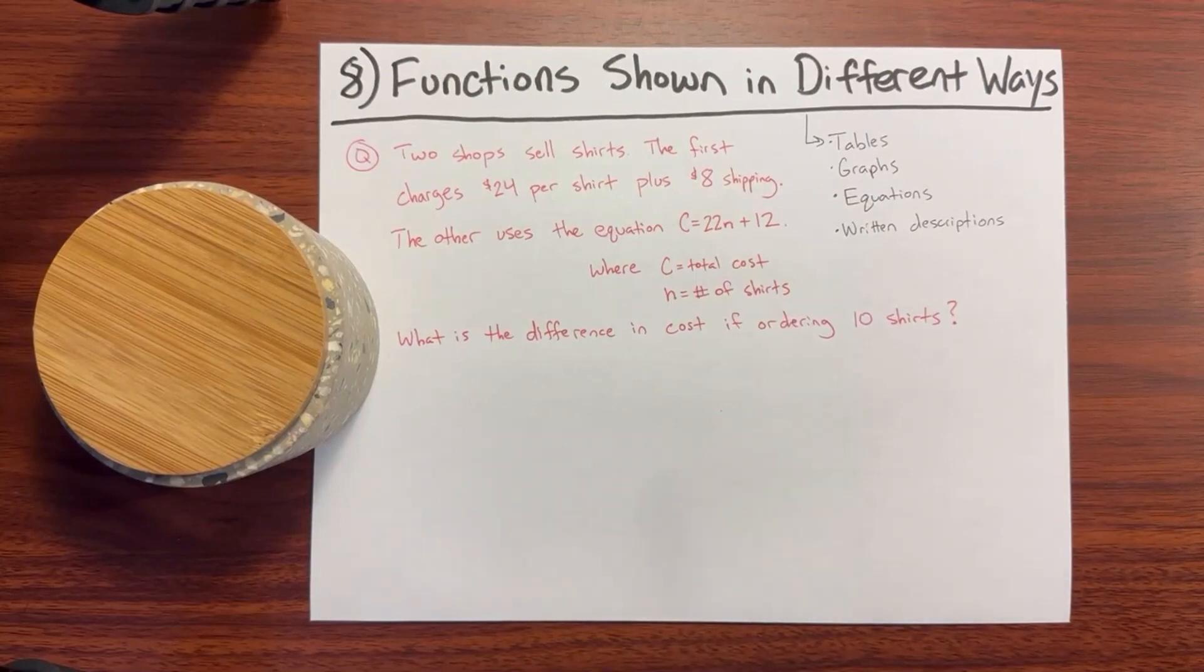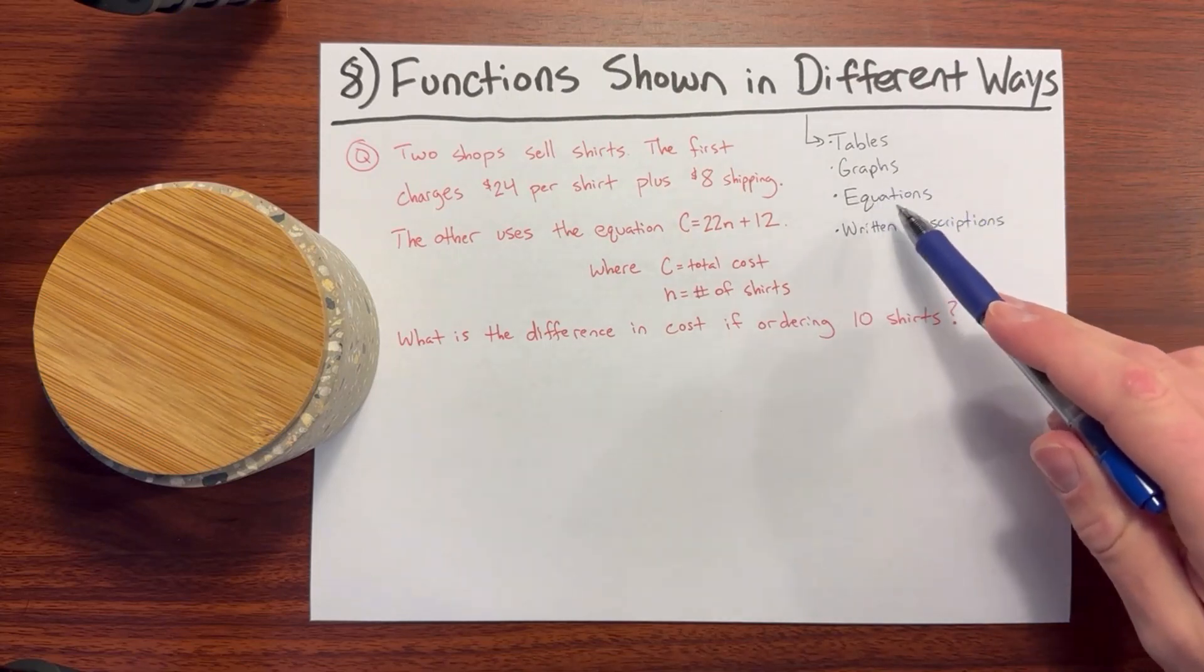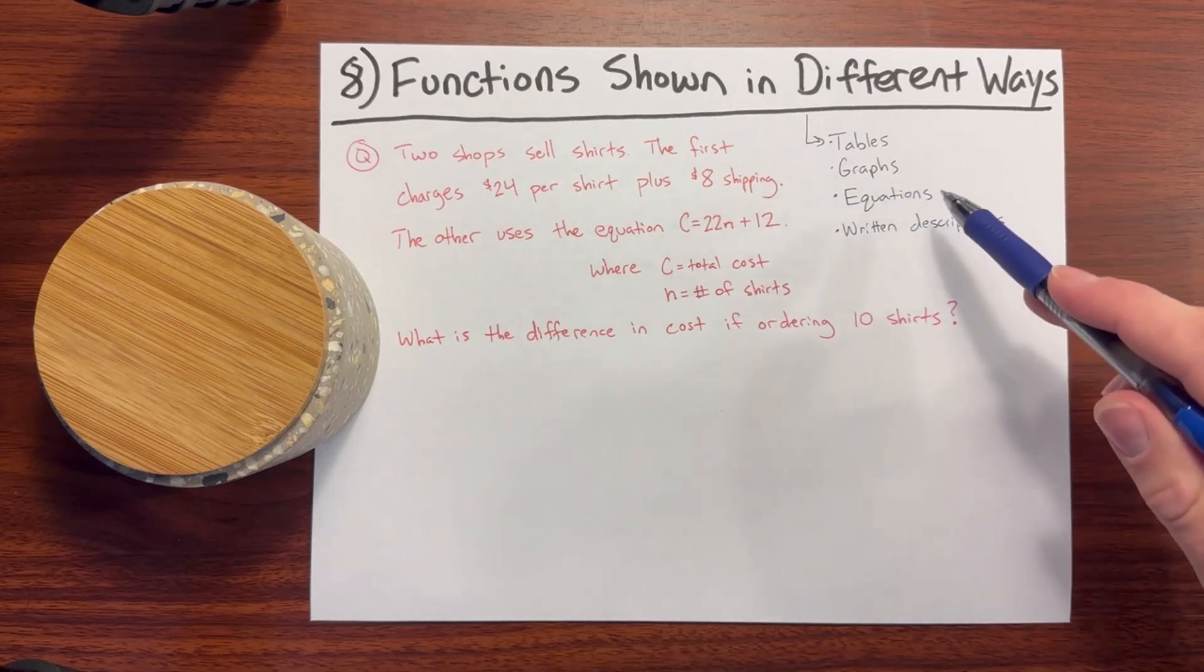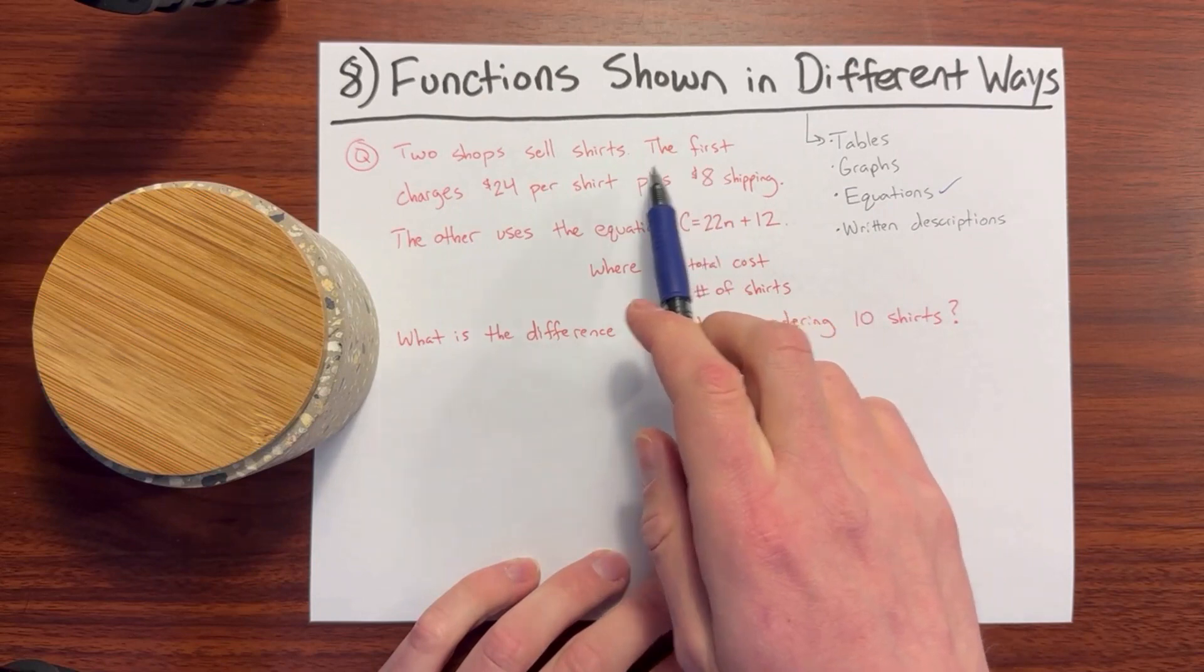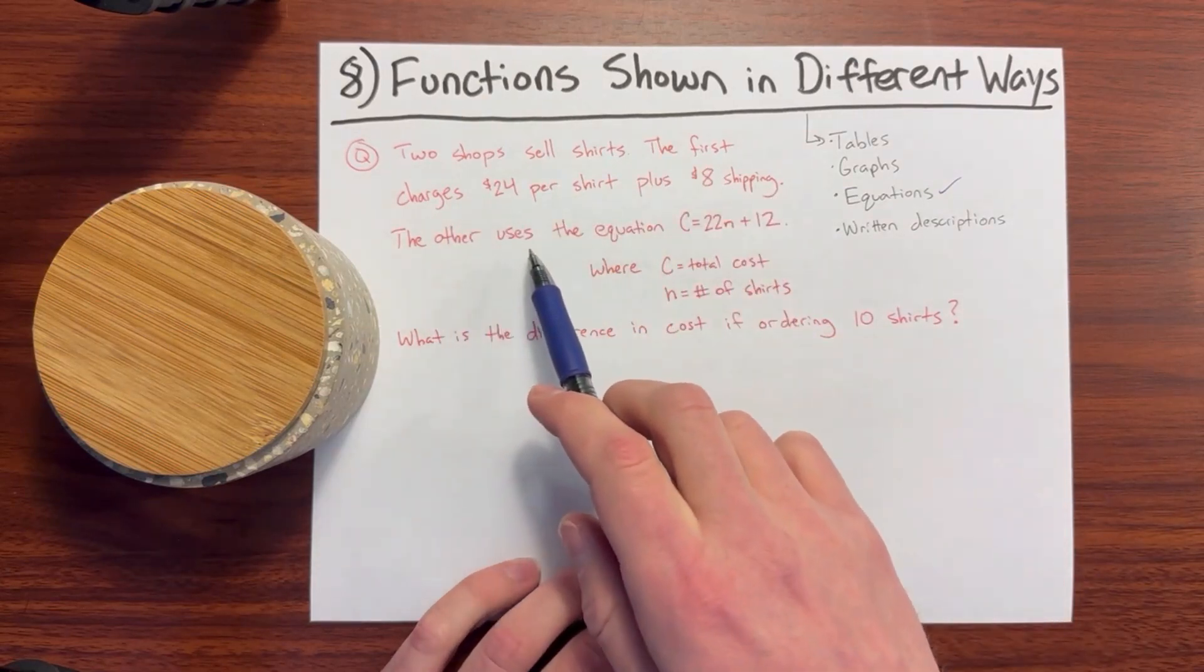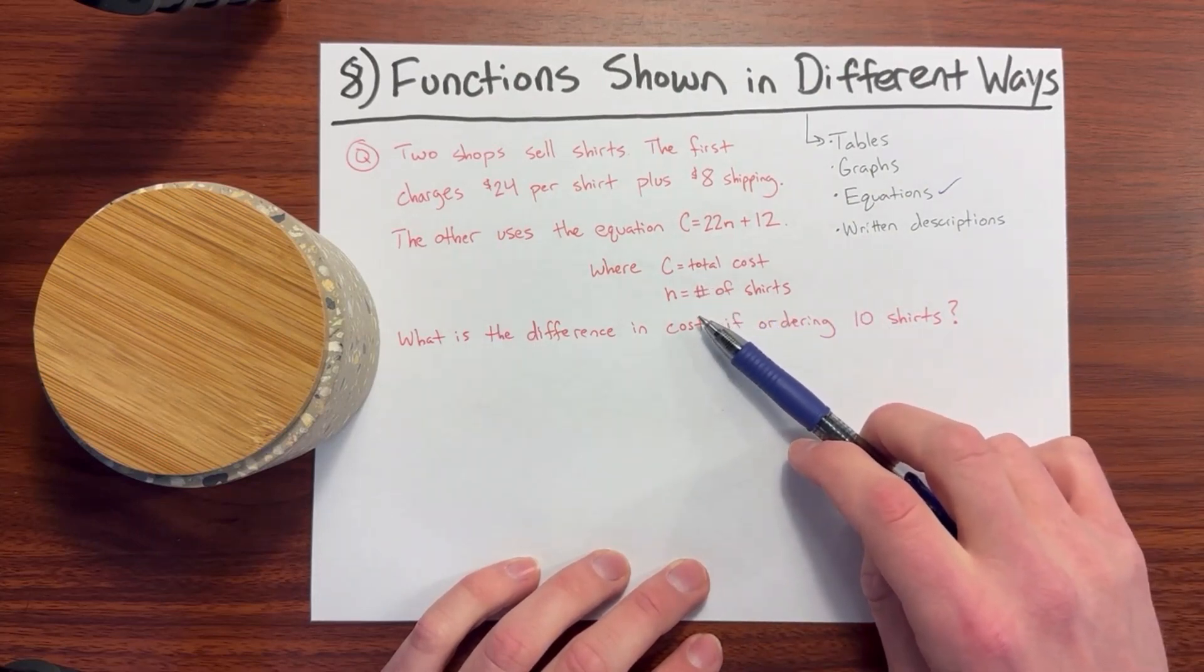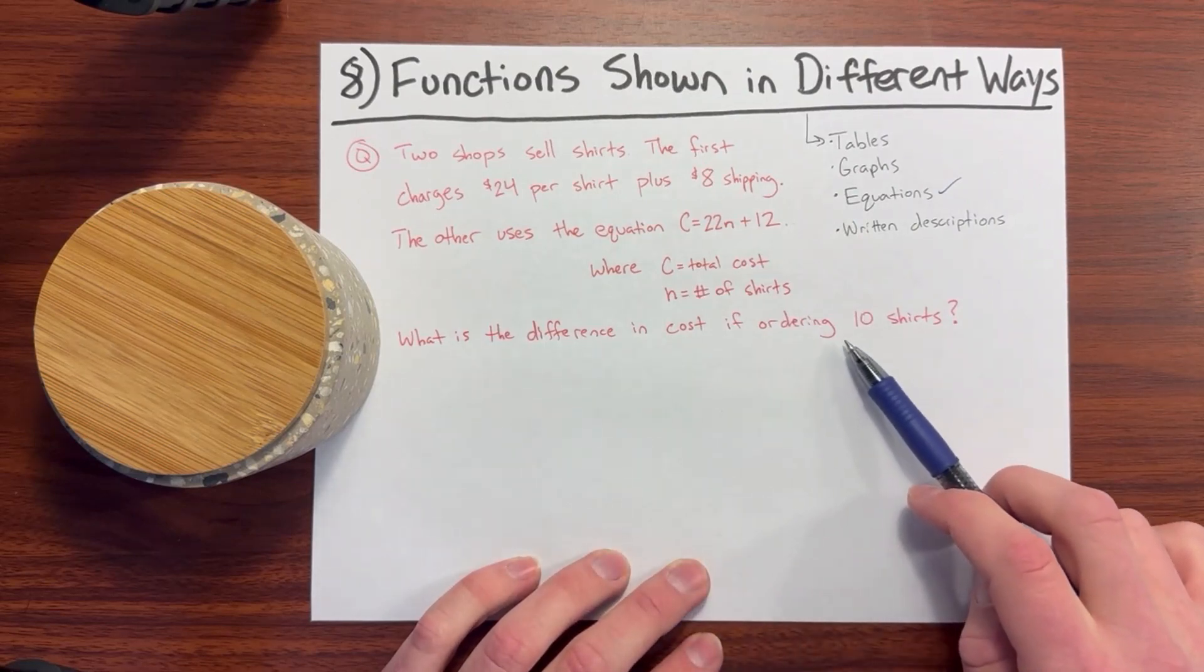Number 8: Compare functions shown in different ways. Those different ways could be through tables, graphs, equations, or written descriptions. But you'll need to convert both of the functions into one of these, most likely into an equation. So a question could ask, two shops sell shirts. The first shop charges $24 per shirt plus $8 shipping. The other shop uses the equation C equals 22N plus 12 where C is equal to the total cost and N is the number of shirts. And it asks, what is the difference in cost if ordering 10 shirts?